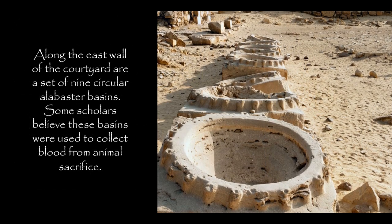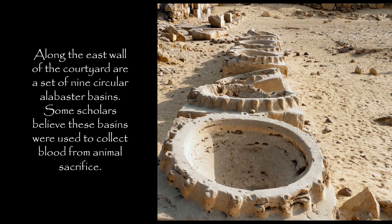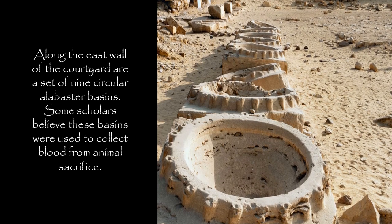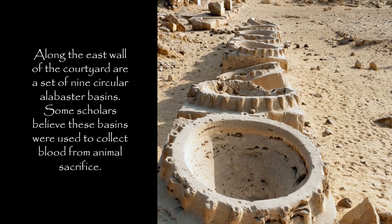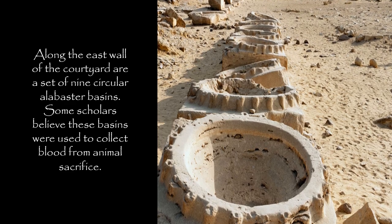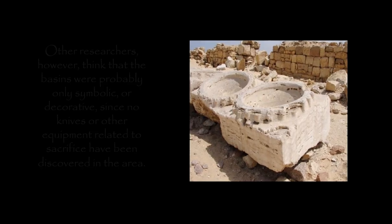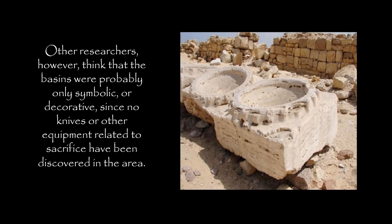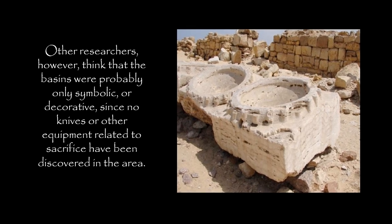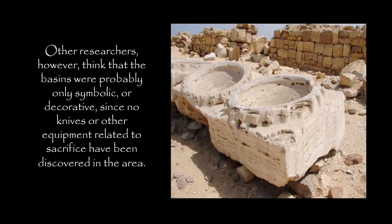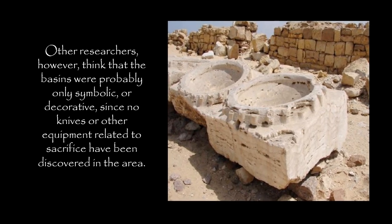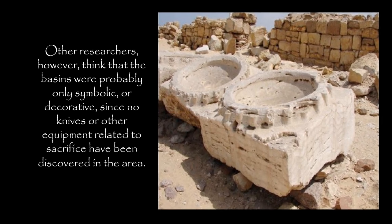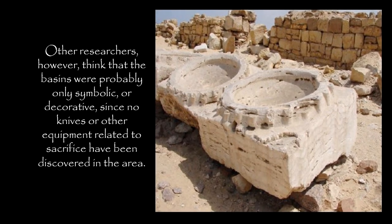Along the east wall of the courtyard are a set of nine circular alabaster basins. Some scholars believe these basins were used to collect blood from animal sacrifice. Other researchers, however, think that the basins were probably only symbolic or decorative, since no knives or other equipment related to sacrifice have been discovered in the area.